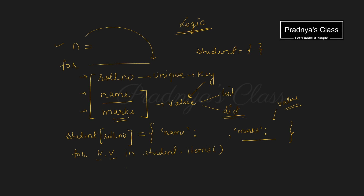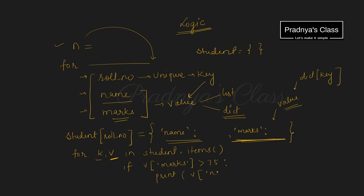Now let's check if marks are greater than 75. We will use if. To get the value, we need to write the dictionary name and in brackets write the key. So v of marks — with this we are getting the marks value. If it is greater than 75, then we need to display the name. Using print, we can display the name: print v of name. If the marks are greater than 75, we are displaying the name. We took variable name as v, but while writing the program we will use more meaningful names.